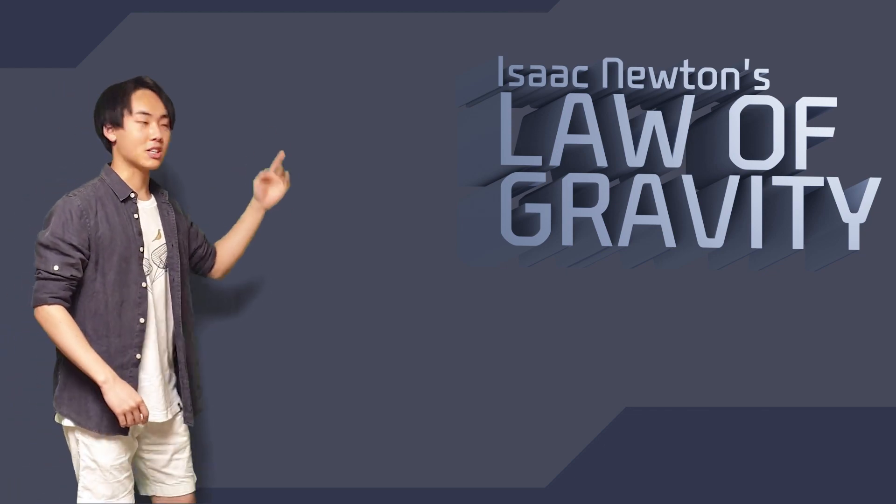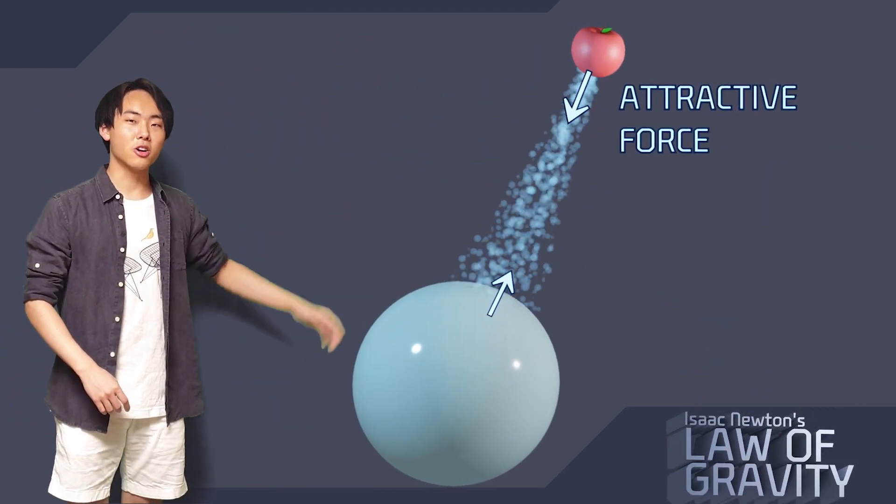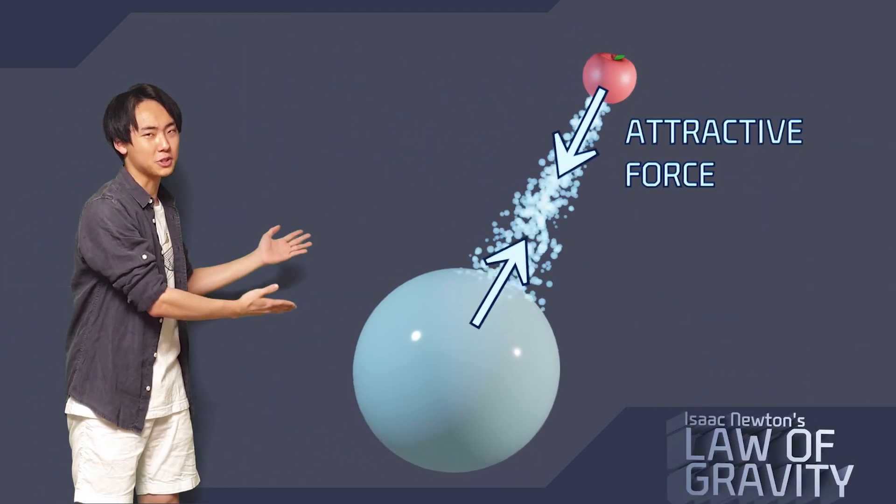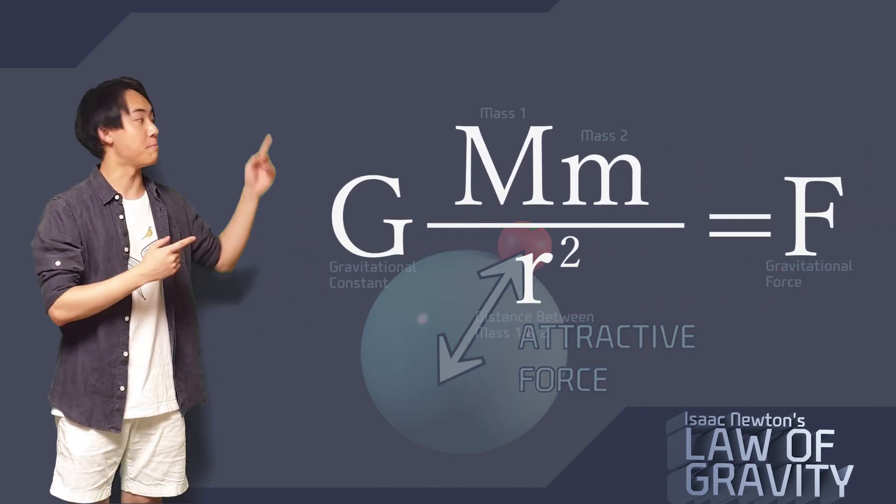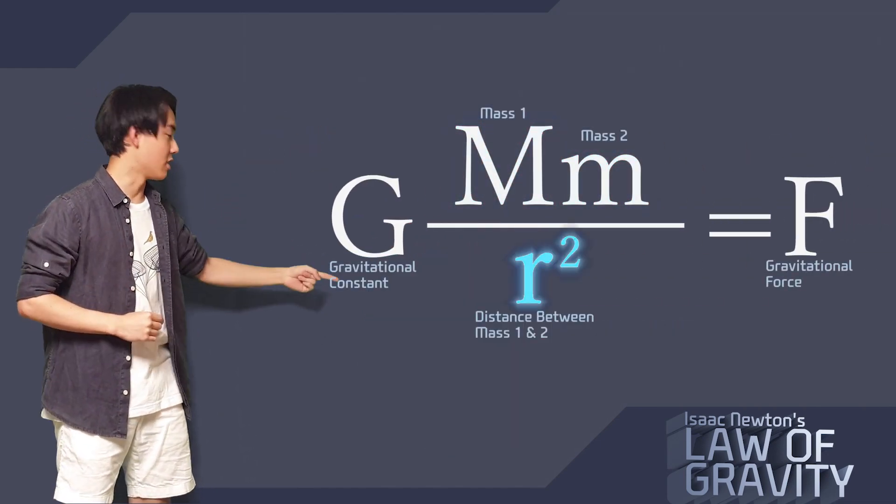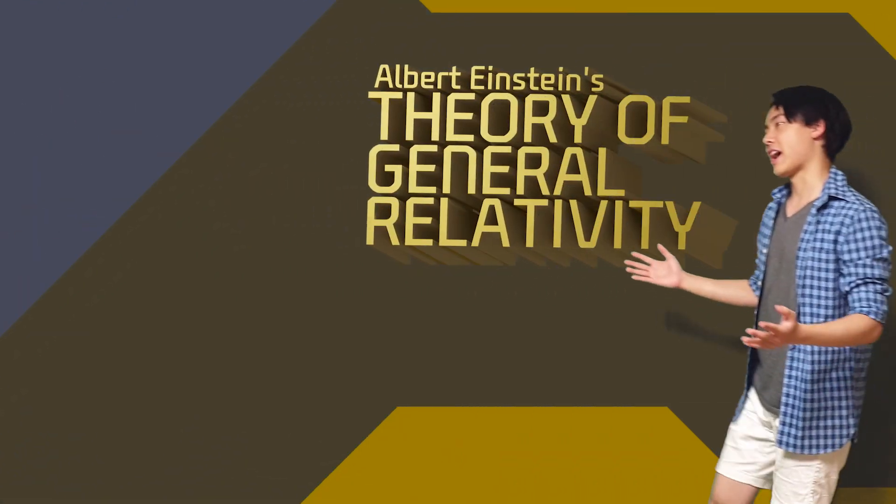First, Isaac Newton's law of gravity states that all particles have some kind of attractive force proportional to the product of mass and inversely proportional to the square of their distances.